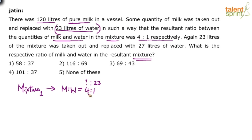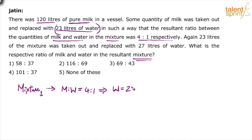So 4 parts is equal to what? I hope all of you have followed. I can write the detailed steps, but I want to cut it down — you should not be writing anything in the exam. Directly, you must know that milk is 4 × 23, and water is 1 × 23. So we can say that water quantity equals 23, which implies milk should be 4 × 23, which is 92.